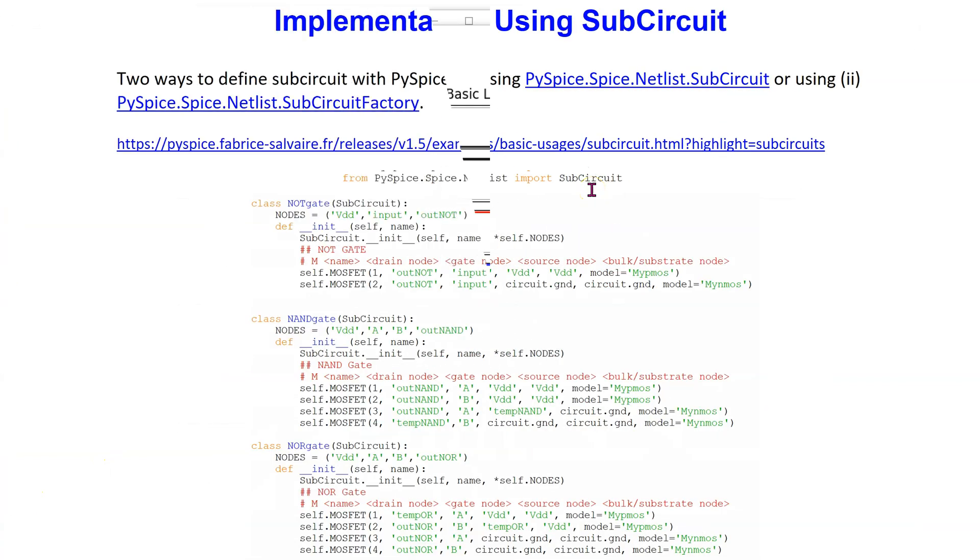We are now ready to simulate combinational logic circuits in PySpice. Recall that a combinational logic circuit is a circuit whose output only depends on the current state of its inputs. To make this process of implementing combinational logic circuits efficient in PySpice, we code up the basic logic gates as sub-circuits.